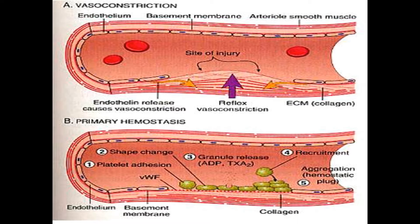After this, the platelet gets activated and releases its granules. The granules are alpha and delta granules, and there will also be an induction of its phospholipid membrane. The alpha granules contain platelet-derived growth factor, which will induce growth of fibroblasts — meaning fibroblasts will secrete more extracellular matrix containing collagen in a regenerating process below the damaged endothelial area. Fibrinogen will help to aggregate the platelets and strengthen the platelet plug.